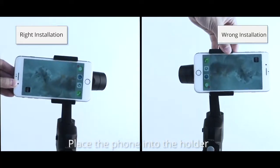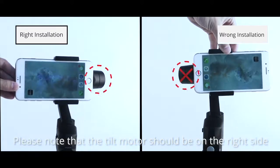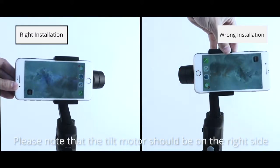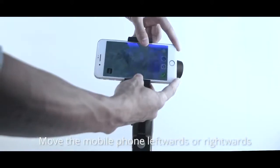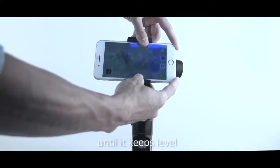Place the phone into the holder. Please note that the tilt motor must be on the right side. Move the mobile phone leftwards or rightwards until it keeps level.